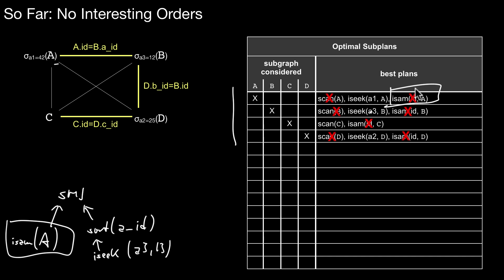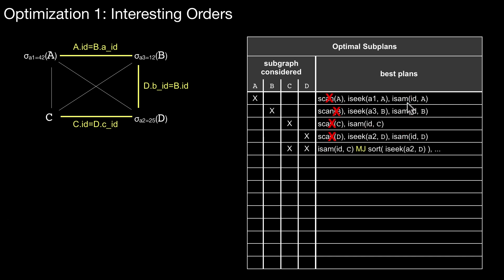So if you want to allow for plans that exploit those existing sort orders, you are not allowed to prune this access method here. That's not allowed. Therefore, what a standard query optimizer would do is it does not throw away this plan. So it would consider it.